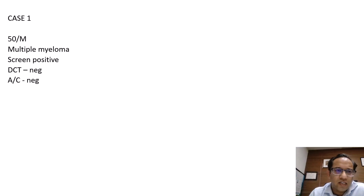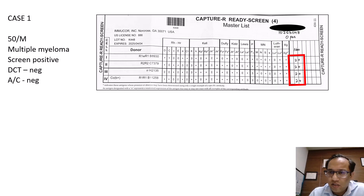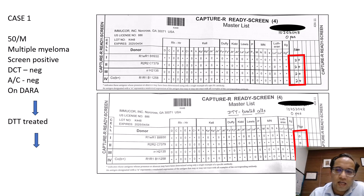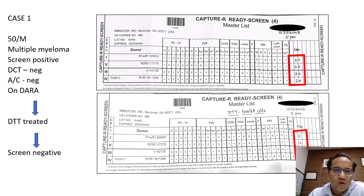I will start with the first case: a 50-year-old male patient with multiple myeloma whose antibody screen came positive, DCT is negative, auto control is negative. There is pan-reactivity — weak reactivity at around 2+ in all panels. Since there was a history of DARA, we treated the cells with DTT, and after that the screen came negative. We could solve this case and provide compatible blood.